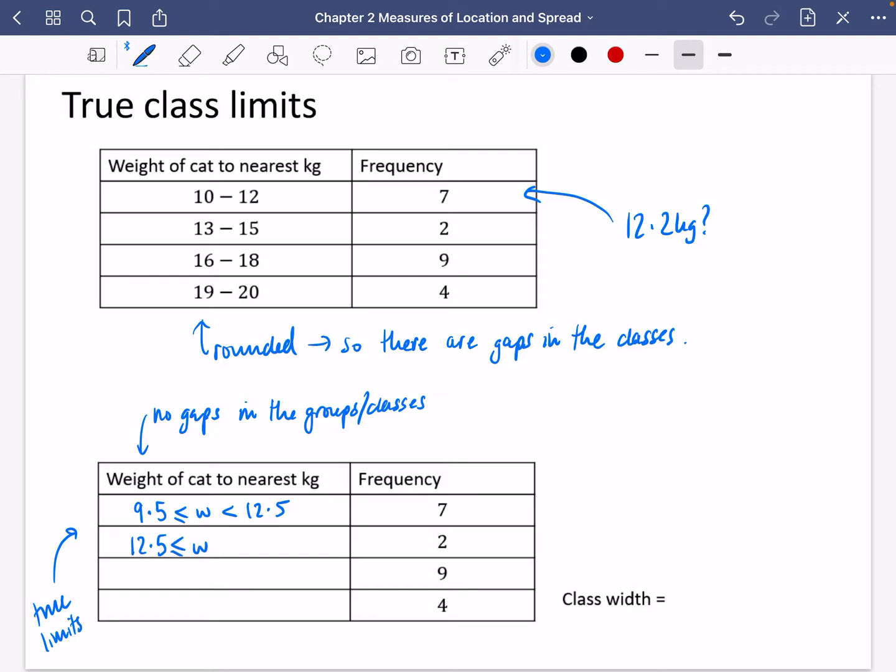So it's going to be 12.5 to, well, 15, all the way up to 15.5. So it's then going to be 15.5 up to 18.5. You're just adding and subtracting those little half points, and then we get 18.5 all the way up to 20.5.